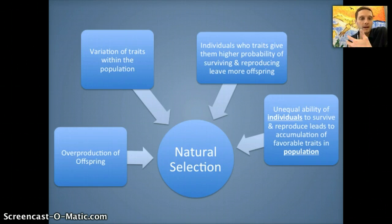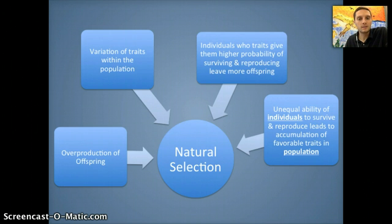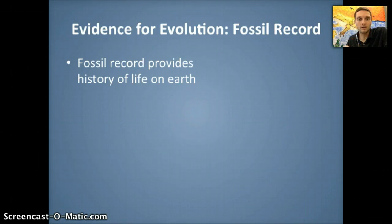Darwin came up with the idea by analyzing the data he collected during his famous Galapagos voyage — looking at bird beaks and various other organisms — and identifying that species change given their habitats and environments. That can change over time depending on how the environment changes. In this video, we'll look more specifically at how this happens and at some of the evidence for biological evolution.